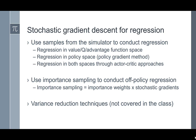The second topic is stochastic gradient descent for regression, which people realized they could do since the 1980s as large amounts of data became available. The idea is to use samples from a simulator to conduct regression in the value function, Q-function, advantage function, or policy space — such as the policy gradient method. You could also do regression in both spaces through actor-critic approaches. For off-policy regression, you must change the weight of each sample through importance sampling, multiplying importance weights with the stochastic gradient.